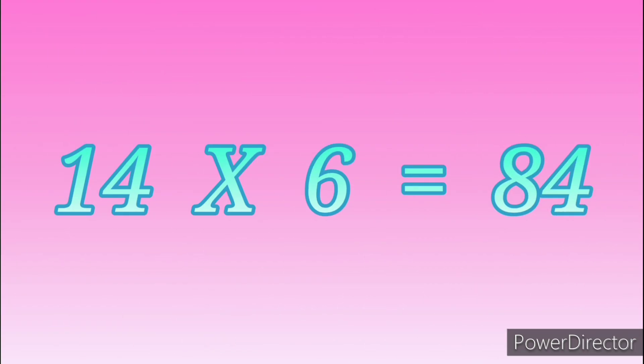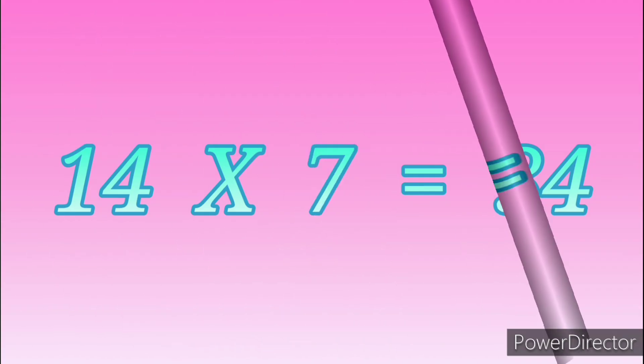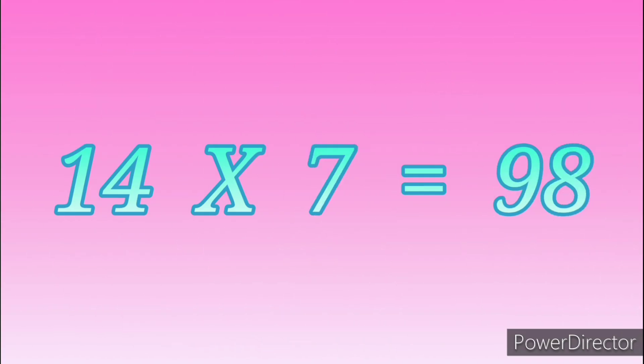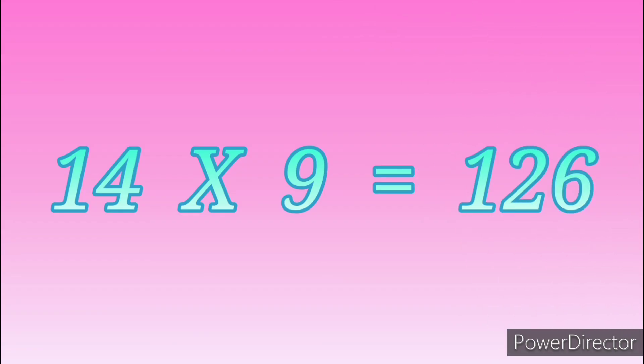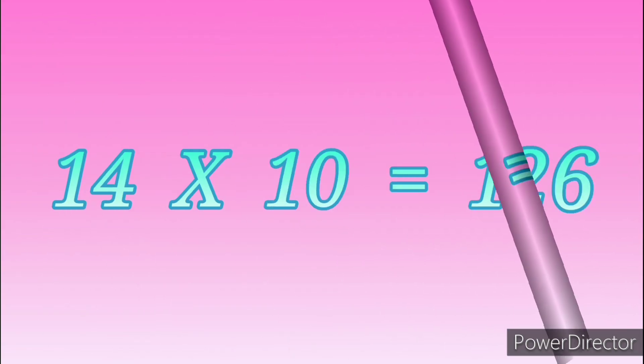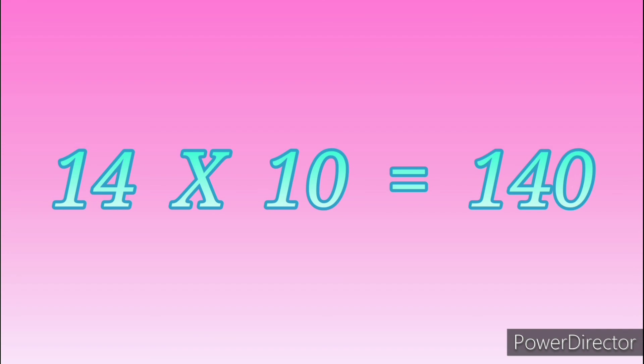Fourteen sixes are eighty-four. Fourteen sevens are ninety-eight. Fourteen eights are one hundred and twelve. Fourteen nines are one hundred and twenty-six. Fourteen tens are one hundred and forty.